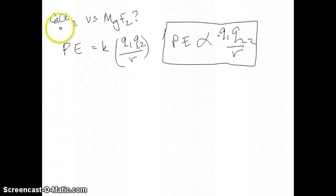So if you want to compare the strength of ionic bonds between these two species, CaCl2 and MgF2, what you have to do is for each species analyze the Q1, Q2 and R and basically compare them to each other and see which one dominates more.